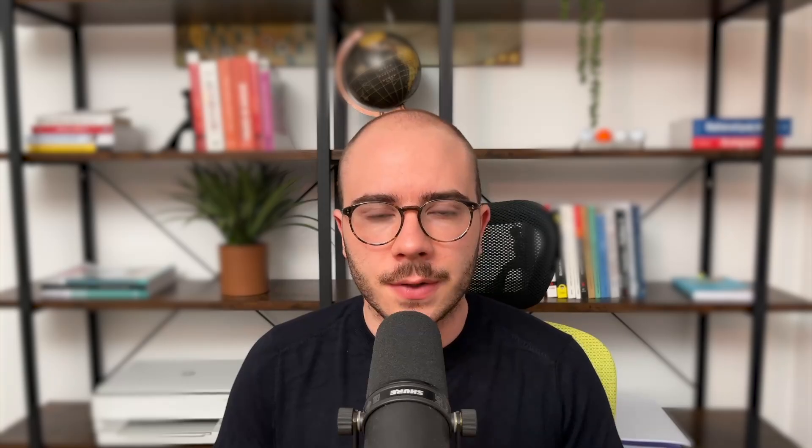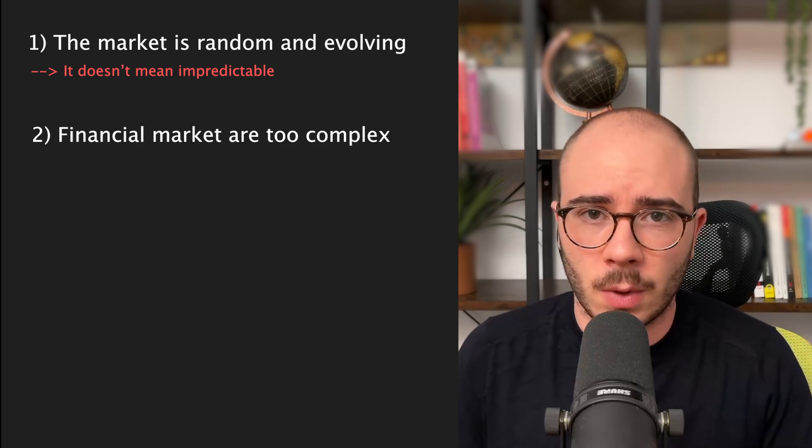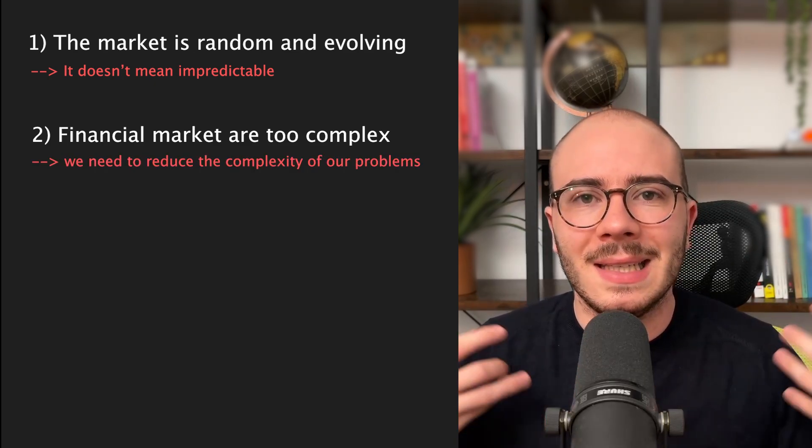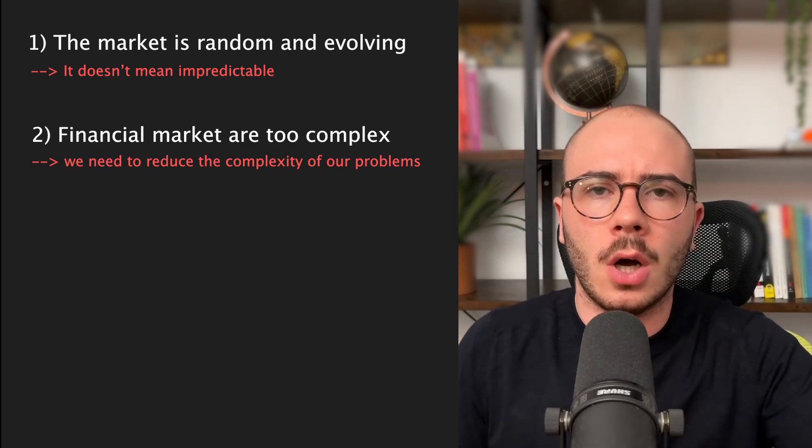Before explaining the method I use, we need to understand the limitation of using machine learning to predict something in finance, and more precisely in trading on financial markets. Nowadays we have very advanced AI — for example, ChatGPT — but even this AI can't predict the market. The two biggest reasons are: the market is continuously evolving and it is random, and the market is too complex to be predicted just by having some features and saying should we go up or go down.